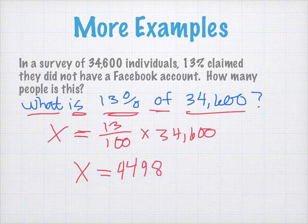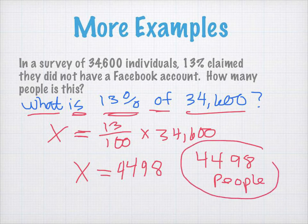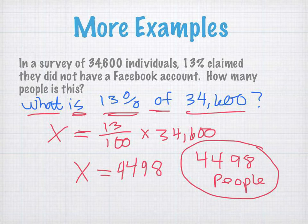Now, we kind of lucked out here. We did not get a decimal. So, our answer would be 4,498 people. If we did get a decimal, we have to be careful. We would most likely round to the closest individual. Because sometimes we can have a rounding error. We can get 13%, or 13% maybe was rounded itself. And we want to represent the closest individual. We'll round to the closest person. But in this case, we did not get that.